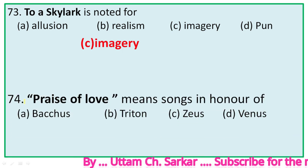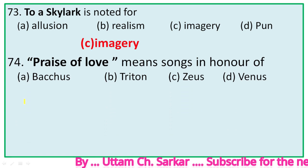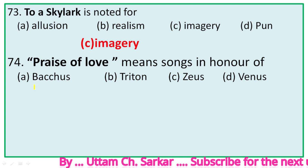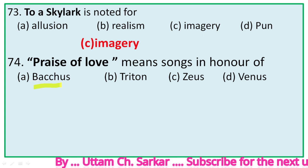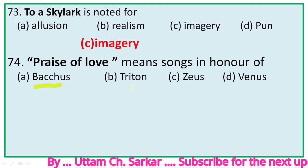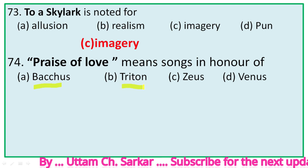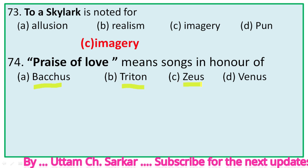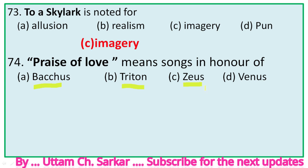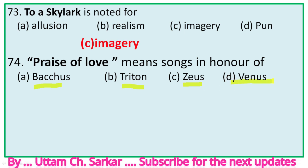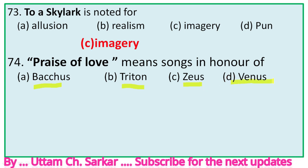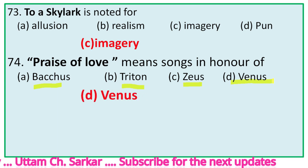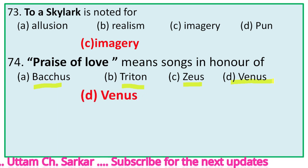Question 74: 'Praise of love' means songs in honor of — options: Bacchus (god of wine), Triton (sea god), Zeus (supreme god), Venus (goddess of love). Bacchus — not the right option. Triton — not right. Zeus — not right. Venus is the goddess of love, so 'praise of love' corresponds to Venus. The right option is D, Venus.